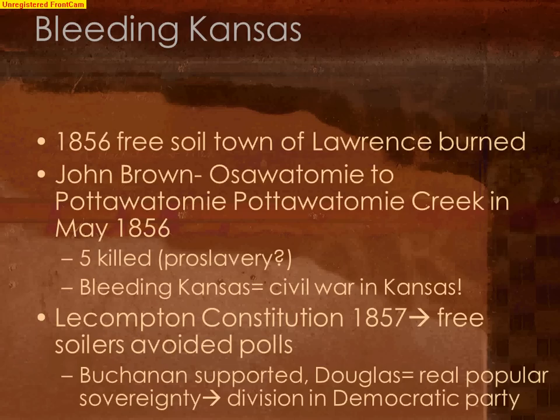Adding fuel to the fire in 1856, the free soil town of Lawrence, Kansas was burned — probably by pro-slavery advocates. This sparked what is called Bleeding Kansas. In retaliation, the abolitionist John Brown from Hudson, Ohio, led a group of followers from Osawatomi to Pottawatomie Creek in May of 1856, killing five people he deemed to be pro-slavery. This was supposed to be in reaction to the burning of Lawrence; in reality, these people were probably not pro-slavery advocates. What this did was jumpstart Bleeding Kansas — literally, on a microcosm level, the Civil War going on in Kansas five years before it broke out nationwide.